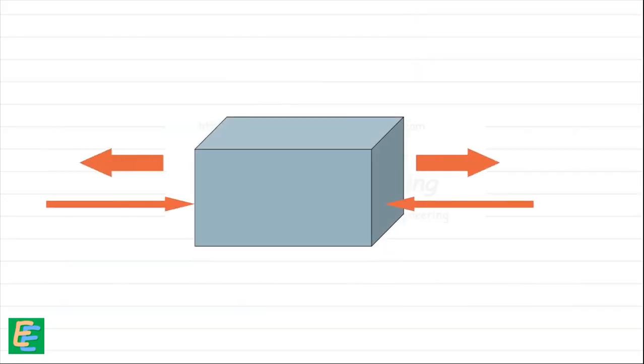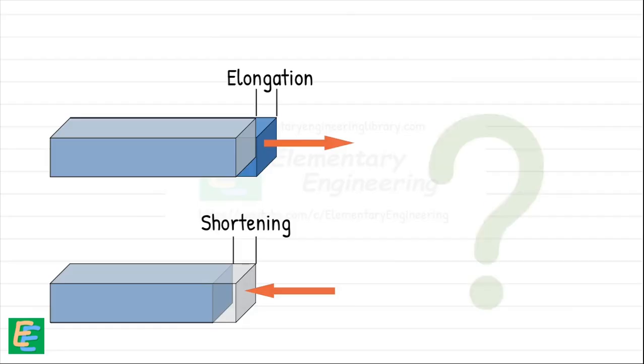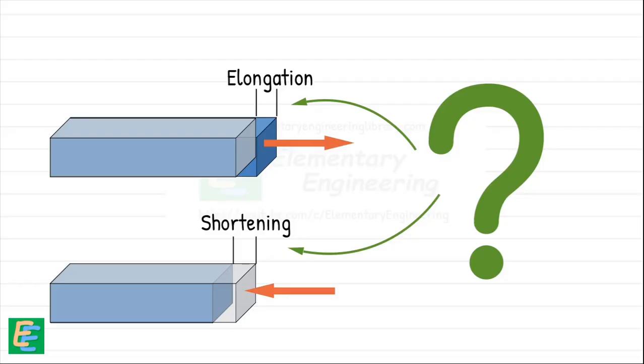Because later, we will see both compressive and tensile forces acting on the same object. Keeping these signs straight will not only make our lives easier, but also prevent costly mistakes. So, we come back to our question. How much does an object actually stretch or shorten under these axial forces?